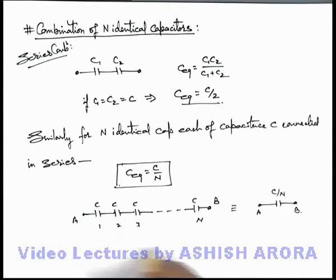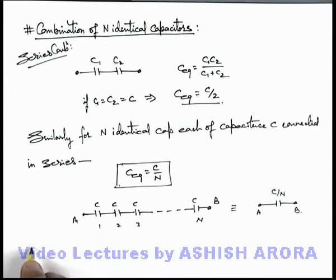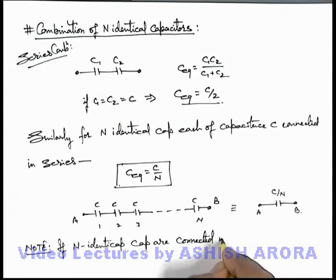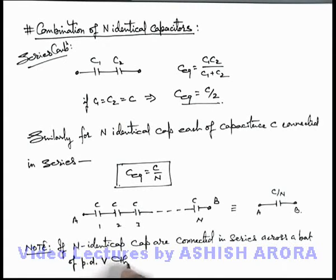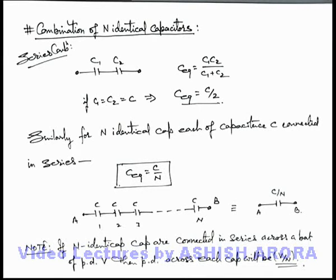Similarly, when connected across a battery, we can see that charges on all capacitors will be equal, and the potential will be equally divided among all n capacitors. So we can also note that if n identical capacitors are connected in series across a battery of potential difference V, then the potential difference across each capacitor will be V by n. This is a very useful relation — you should always keep it with you.